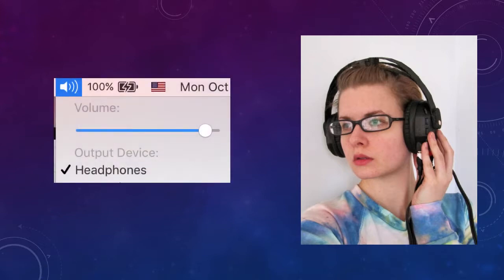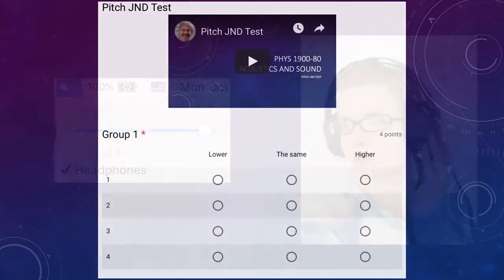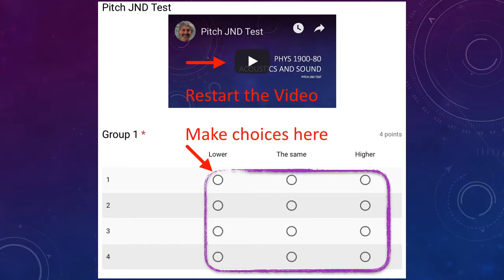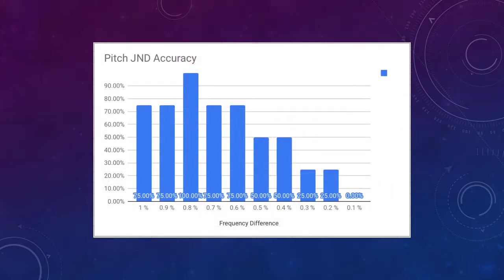Listen to the Pitch JND test in a quiet place with earbuds or headphones if possible. Start the video and adjust the volume to a comfortable listening level. Once you have set the level, restart the video to take the test. You'll make your choices below the video. Your results are going to be used for a survey. You'll be graded on participation, not accuracy. The class results will be collected and information reviewed later.